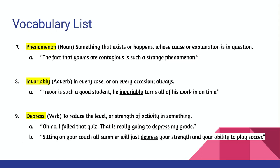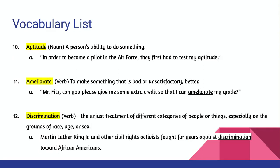I want to point out that the word 'depress,' in the way it is used in the article, does not have to do with emotion. Number ten is 'aptitude,' a noun meaning a person's ability to do something. Number eleven is 'ameliorate,' a verb meaning to make something that is bad or unsatisfactory better — taking something that is not good and making it good.